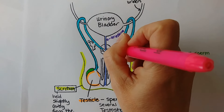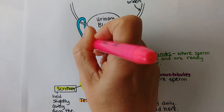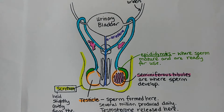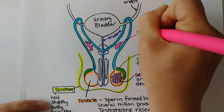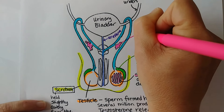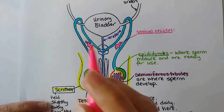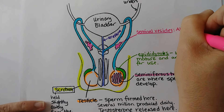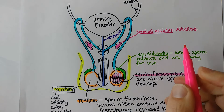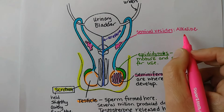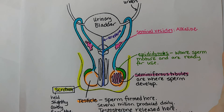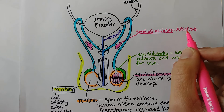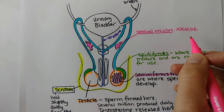The first structures are paired glands called the seminal vesicles, which make most of the fluid found in semen. Their fluids are alkaline, which is important because the female vagina is very acidic. The acidity needs to be neutralized so that sperm can survive in the reproductive tract. The pH of semen is slightly alkaline so the sperm can survive until they reach the uterus.